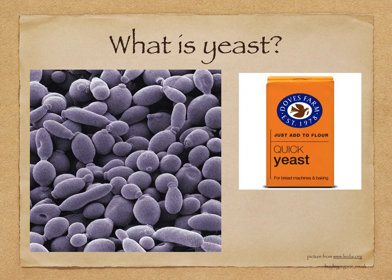What is yeast? It's a unicellular fungus. You can buy dry yeast in a dry powder form and activate it by adding water and sugar. Yeast can respire anaerobically — this requires glucose, and it makes carbon dioxide and ethanol, which is the alcohol.